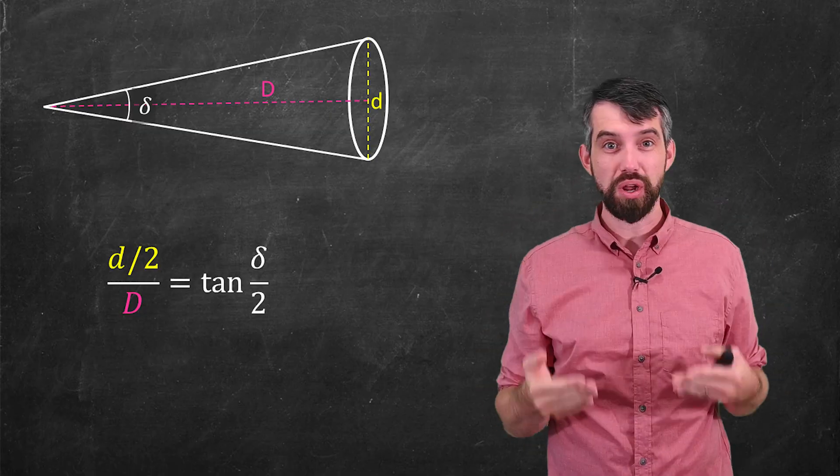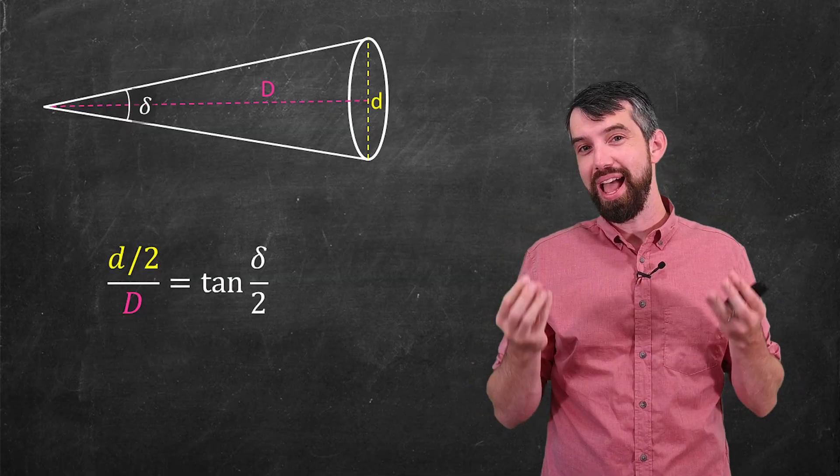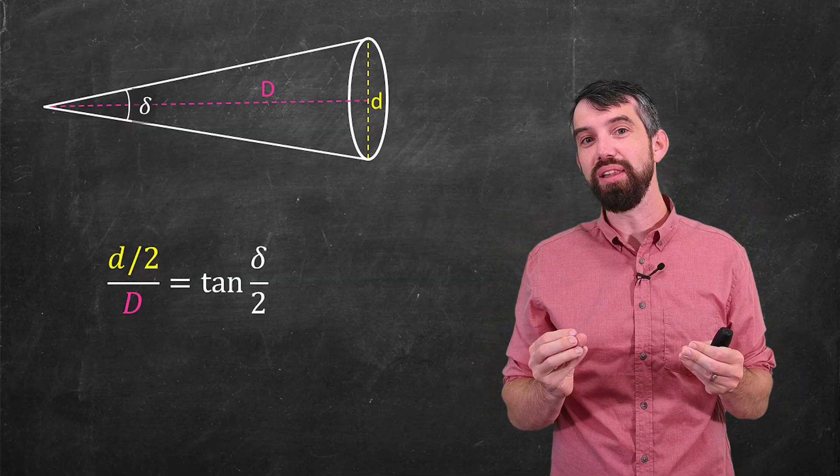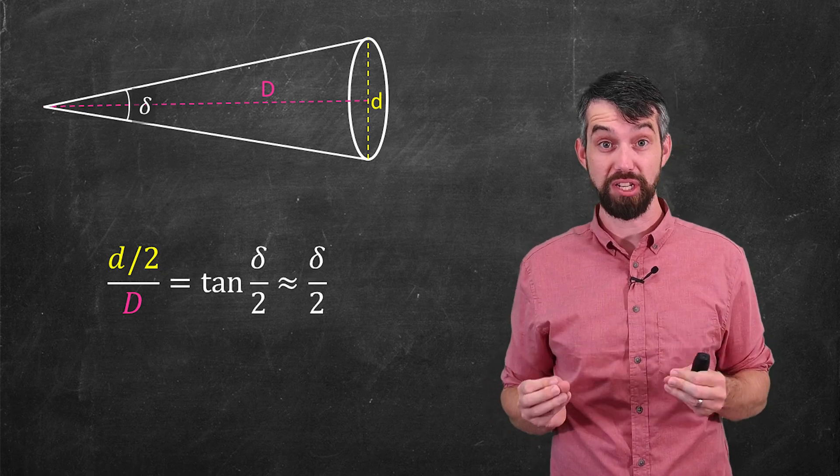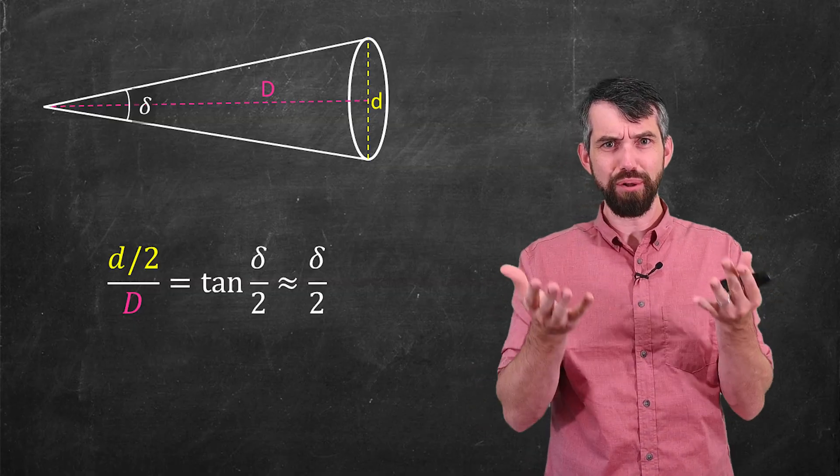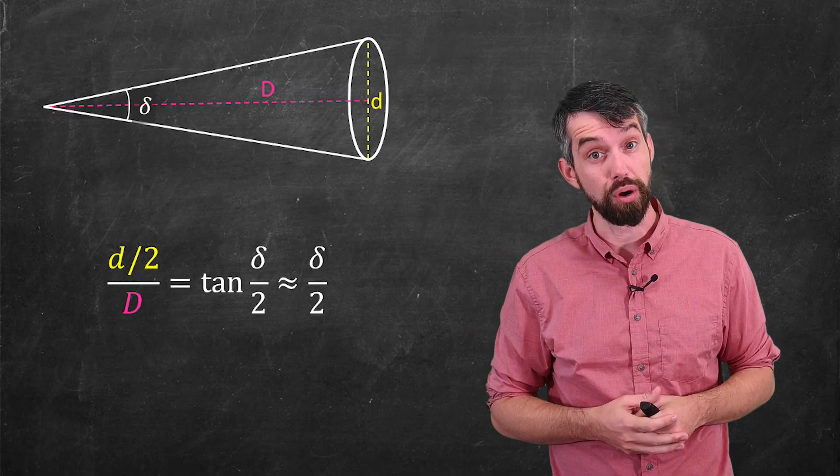So that small angle approximation applies. Tangent is sine over cosine. Cosine of effectively zero is just one. And since sine of the angle is just the same thing as the angle by our small approximation, this is nothing more than delta divided by two.